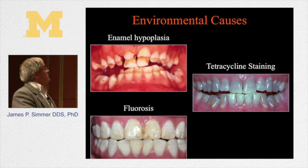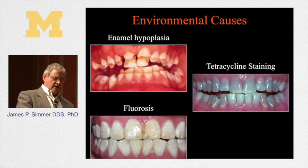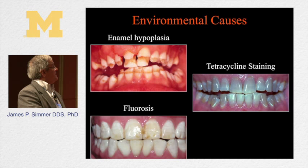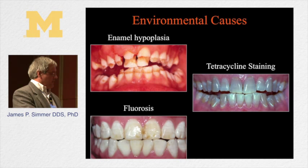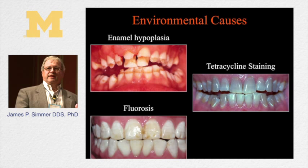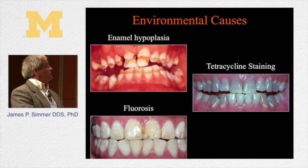Three of these cases were due to environmental causes: tetracycline staining, fluorosis, and enamel hypoplasia. The environmental causes are sometimes easier to detect because, at least in cases of enamel hypoplasia and tetracycline staining, there shouldn't be any other people in the family affected — it's not going to run in the family. With fluorosis, you could have it appear in multiple family members, but you'd check the well water or water source and probably narrow down the diagnosis.